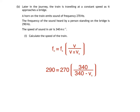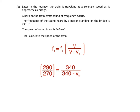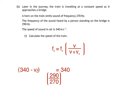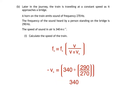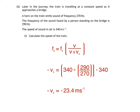Now all we have to do is rearrange to find Vs, the speed of the train, which is easier said than done. First, I'm going to divide both sides by 270, then multiply both sides by (340 minus Vs), then divide both sides by (290 divided by 270). After getting rid of the brackets on the left-hand side, I'll subtract 340 from both sides, which gives me negative Vs as the subject. The right-hand side works out to be negative 23.4 metres per second, so Vs is 23.4 metres per second.